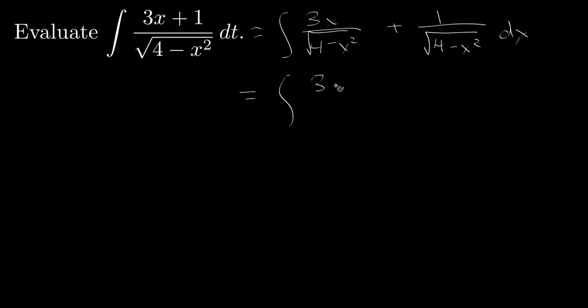Now the first one, because we have a 3x in the numerator and inside the square root of the denominator we have 4 minus x squared, we have this relationship. 3x is kind of like the derivative of 4 minus x squared. Now it's off by a constant, but that's not a problem.